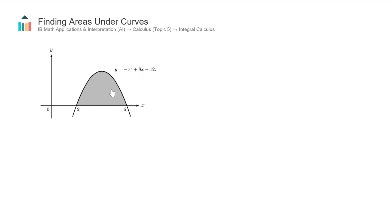The area under the curve down to the x-axis between points 2 and 6 on the x-axis. So I can write out a definite integral that represents this area: the integral from 2 to 6 of negative x squared plus 8x subtract 12, and I'm going to integrate it with respect to x.